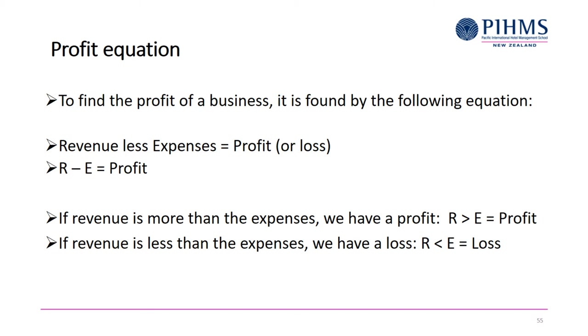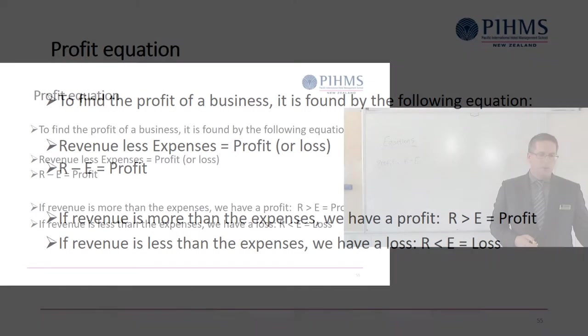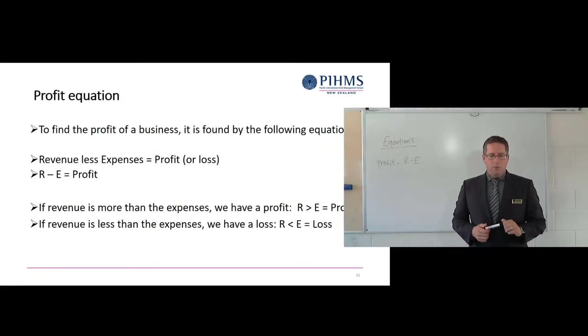Okay, so profit is the part that the business gets to keep after paying all the costs. You have money coming into the business from all the customers. You have to pay a lot of costs—that's all your expenses. Profit is what's left over at the end. So we have the equation there: revenue less expenses equals profit or loss. So R minus E, revenue minus expenses, equals profit.